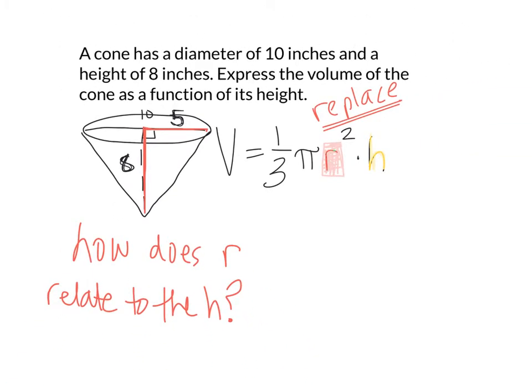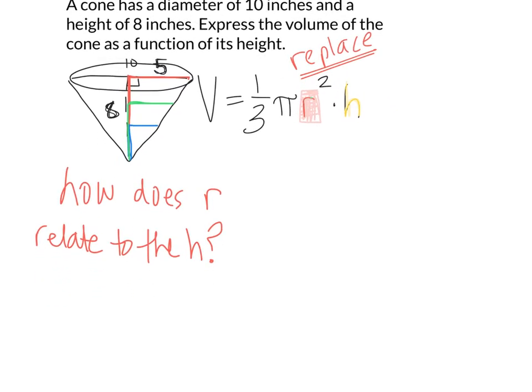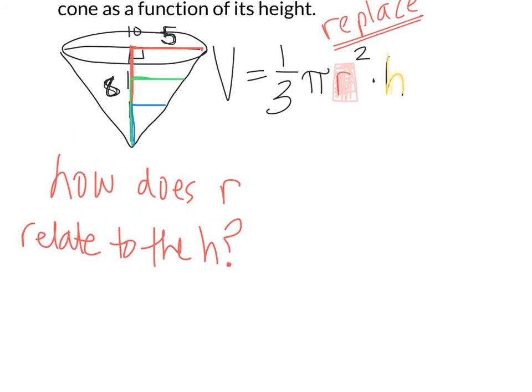At any time when there's a certain height, there will be a corresponding radius. Every height will have a corresponding radius. If you're looking here, hopefully you're noticing that all of these are right triangles, and there's lots of similarity when it comes to right triangles.